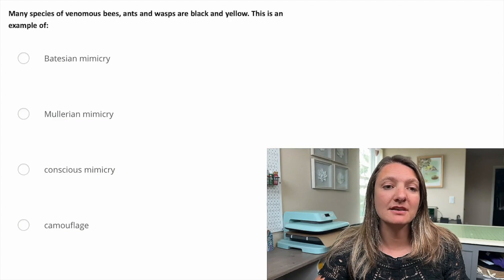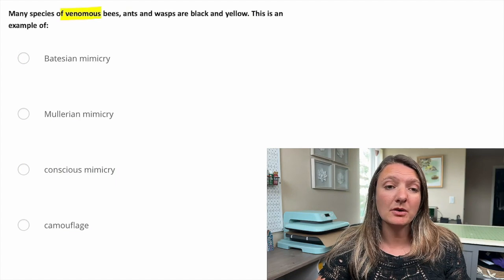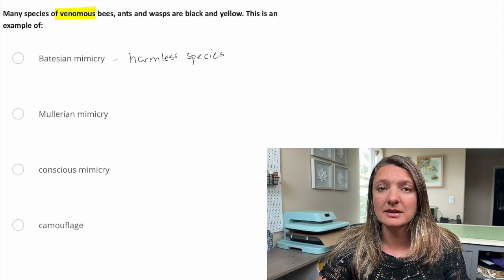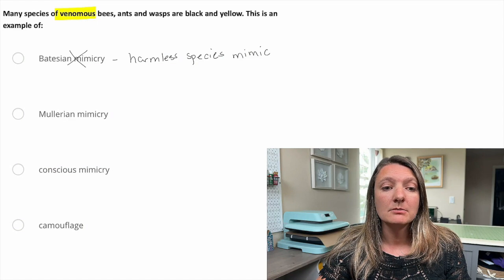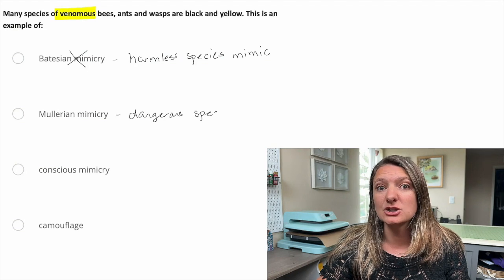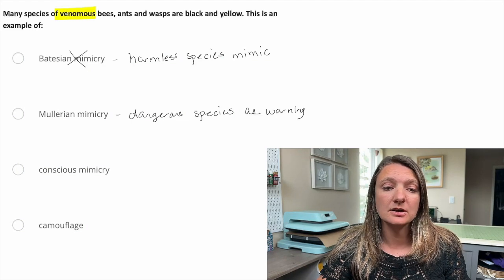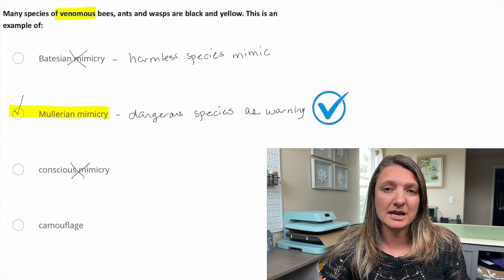Question one. Many species of venomous bees, ants, and wasps are black and yellow. This is an example of what? A reminder that we're talking about venomous species here. Batesian mimicry is when you have a harmless species mimicking species that are not harmless — that are either poisonous or venomous. So that's not what we're seeing here. Müllerian mimicry is where you have this exact scenario: a dangerous species mimicking each other as a kind of warning sign. So this example is Müllerian mimicry — that is our correct answer, B. Conscious mimicry is not something that occurs, and camouflage doesn't apply since they're not blending into their environment. So our answer is B.